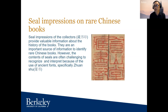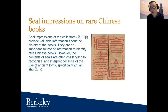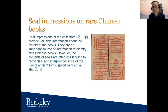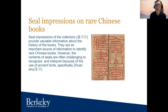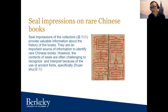Seal impressions on Chinese rare books are quite important for Chinese rare book studies because they provide valuable information about the history of the book — particularly for overseas Chinese collections, giving evidence of how books traveled from China overseas. Berkeley has a large digitization project for Chinese rare books, trying to digitize all the Chinese and rare collections. How to extract seal impressions from digital images would be interesting for scholars and librarians; if we can develop a seal collections database it would be useful for scholars.